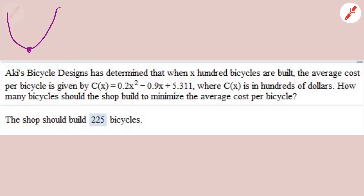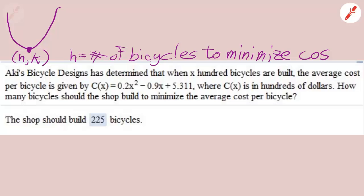Aki's bicycle designs has determined that when x hundred bicycles are built the average cost per bicycle is given by this formula c of x equals 0.2x squared minus 0.9x plus 5.311. All right, well h is the same thing that x is. h is the number of bicycles built, but in this case it's the particular number of bicycles built that will minimize the cost of the bicycle.